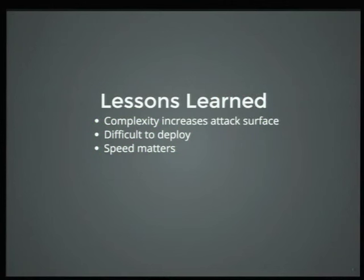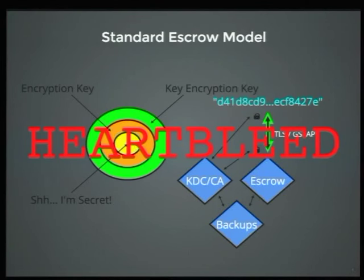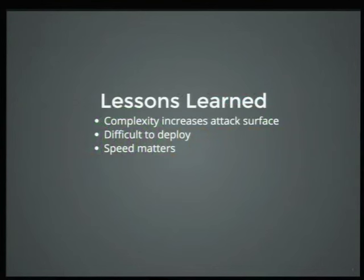So we've learned a few lessons: complexity increases the attack surface, escrow is difficult to deploy, and speed matters. If we go back a slide, notice all of this complexity — every single hop in this complex chain adds latency. When you have a data center with 100,000 servers all coming up at the same exact time from a power outage, what's going to happen to this escrow server? We're going to have a massive bottleneck, a denial of service. So speed matters.